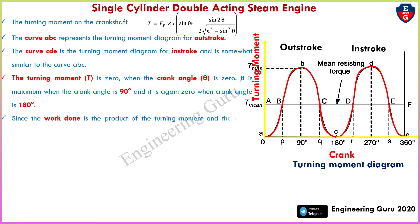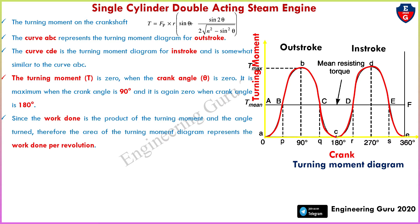Since the work done is a product of the turning moment and the angle turned, therefore the area of the turning moment diagram represents the work done per revolution. The out stroke is from 0° to 180° and the in stroke is from 180° to 360°.